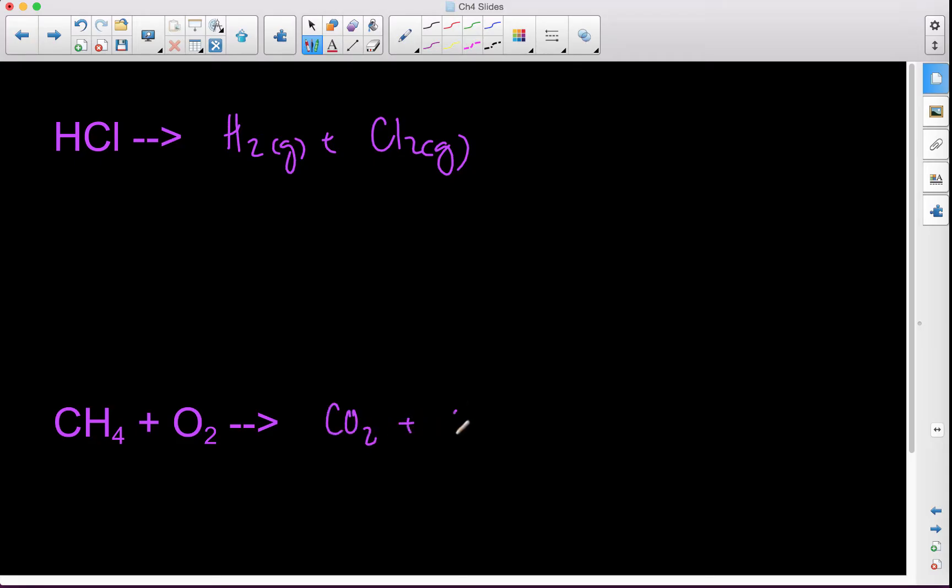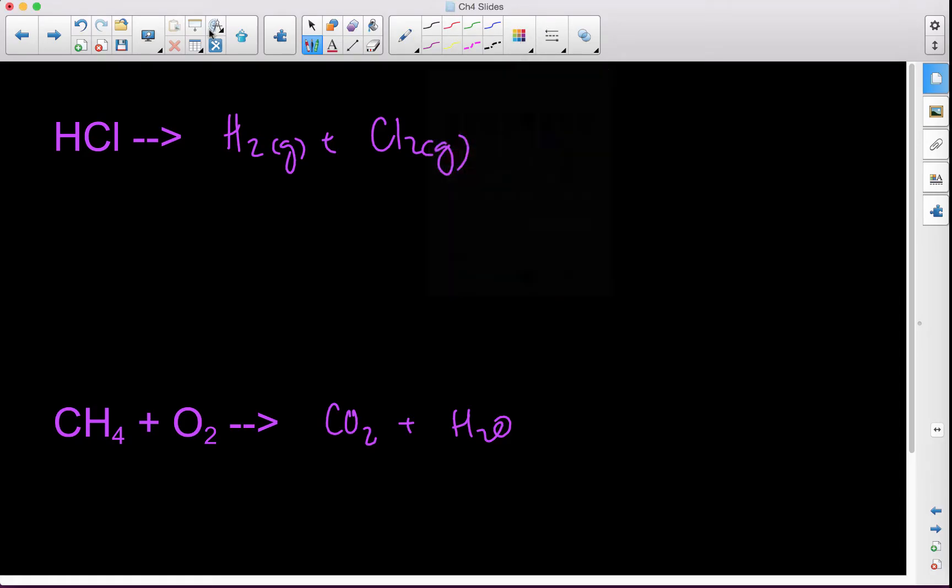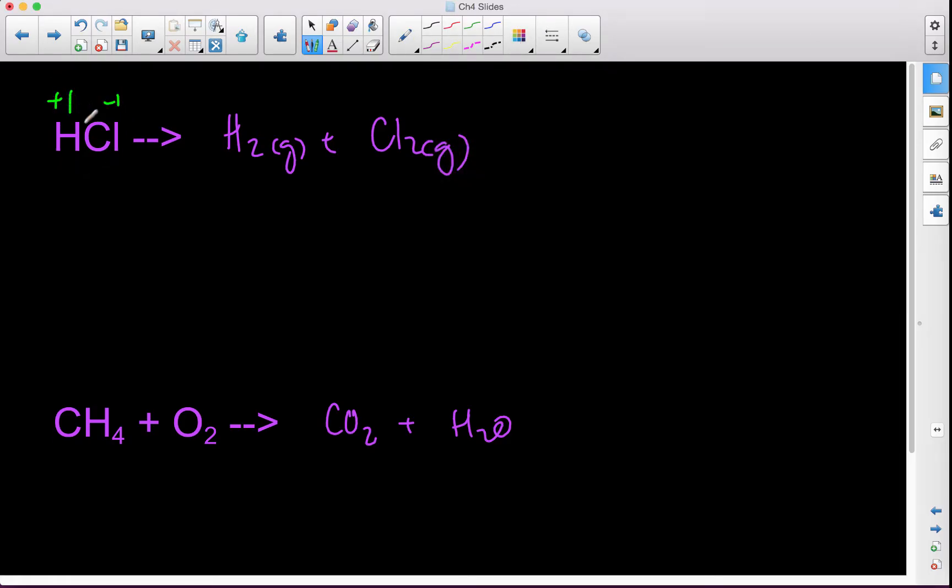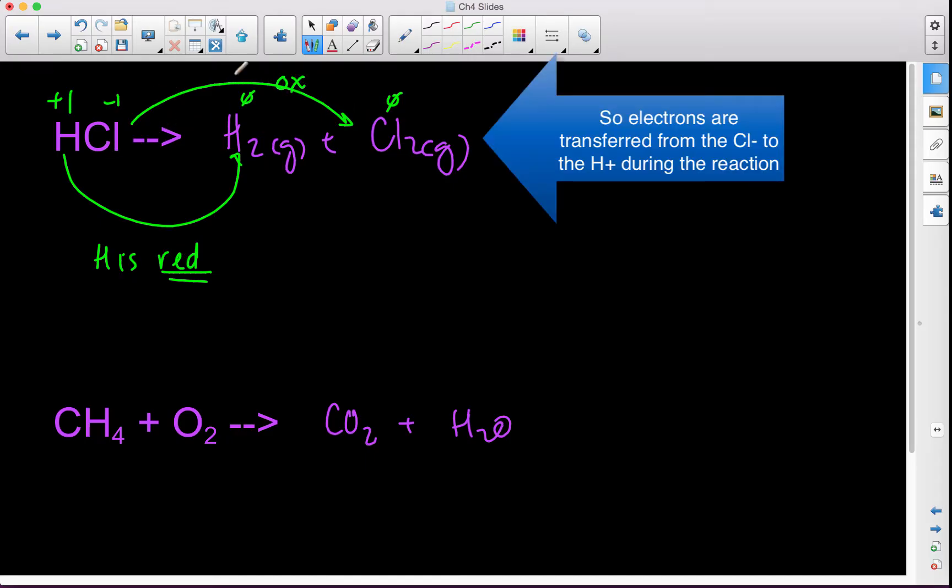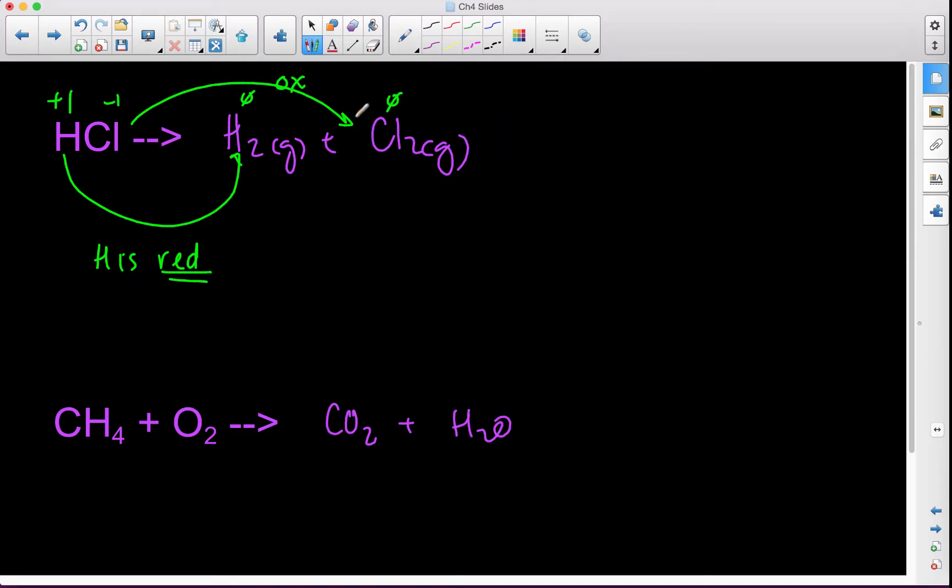Now let's go ahead and assign some oxidation states. So HCl, this is negative one, this is plus one, this is, therefore we could say that hydrogen is reduced. Yes? Hydrogen is reduced because it became more negative. Chlorine, on the other hand, is oxidized. Chlorine is oxidized because it becomes more positive. Which is why it doesn't have to actually become positive, nor does it have to become negative. It becomes more positive or it becomes more negative.